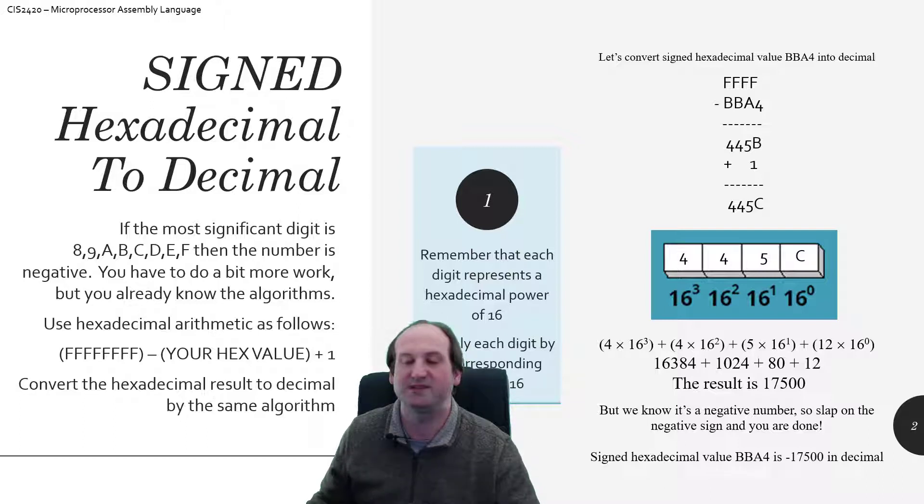So 16,384, plus 1,024, plus 80, plus 12, gets me 17,500. And again, I know this is a negative number, so the last step is just to absolutely remember to slap that negative sign on there. So BBA4 resolves down to, in decimal, negative 17,500.